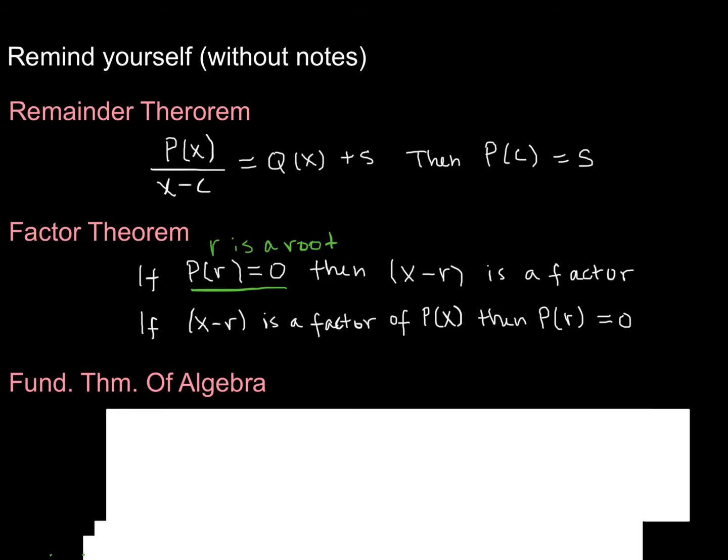And the factor theorem also says, look, it goes the other way, too. If x minus r is a factor of P(x), then you know that r is a root. If you plug r into your function, you'll get 0. And that just is really common sense. If you plug r in here, you get r minus r. And that's 0. So your entire function would be equal to 0.